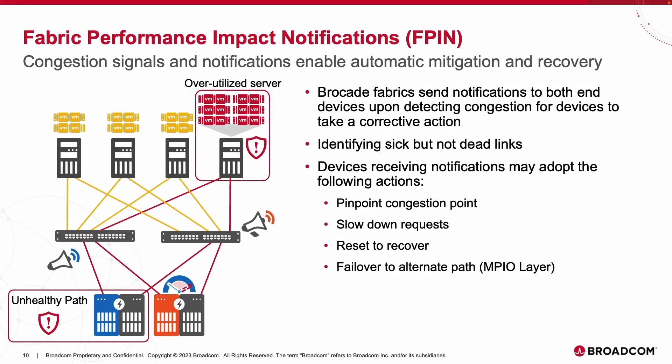FPIN enables Brocade to share events the Fabric is aware of with any of the attached N devices. This allows N devices to become aware of existing issues related to congestion or path health, providing the opportunity for N devices to begin taking autonomous actions to remediate such issues with zero user intervention. Fabric Performance Impact Notifications can be transmitted in software or, with Gen 7, transmitted in hardware.